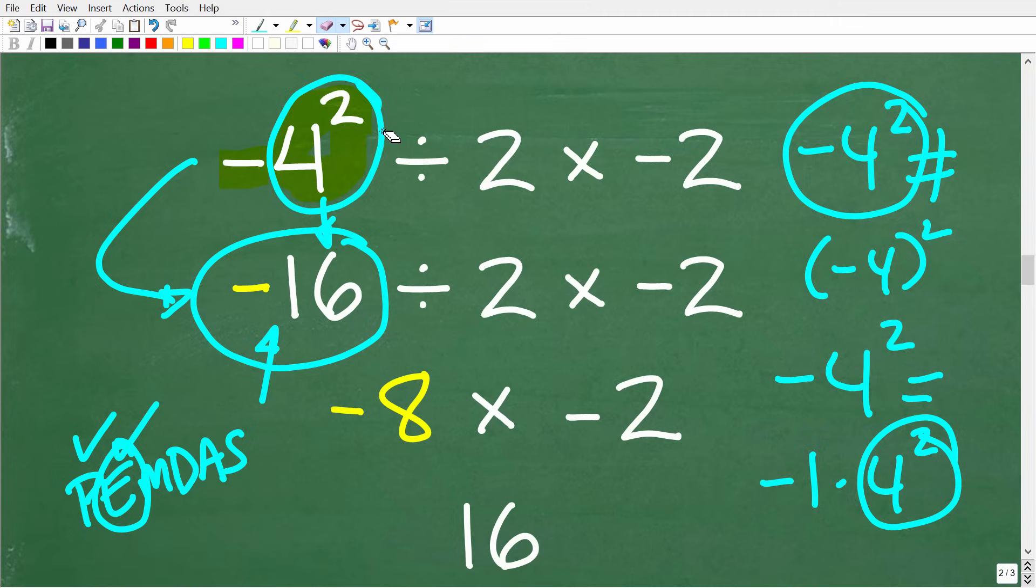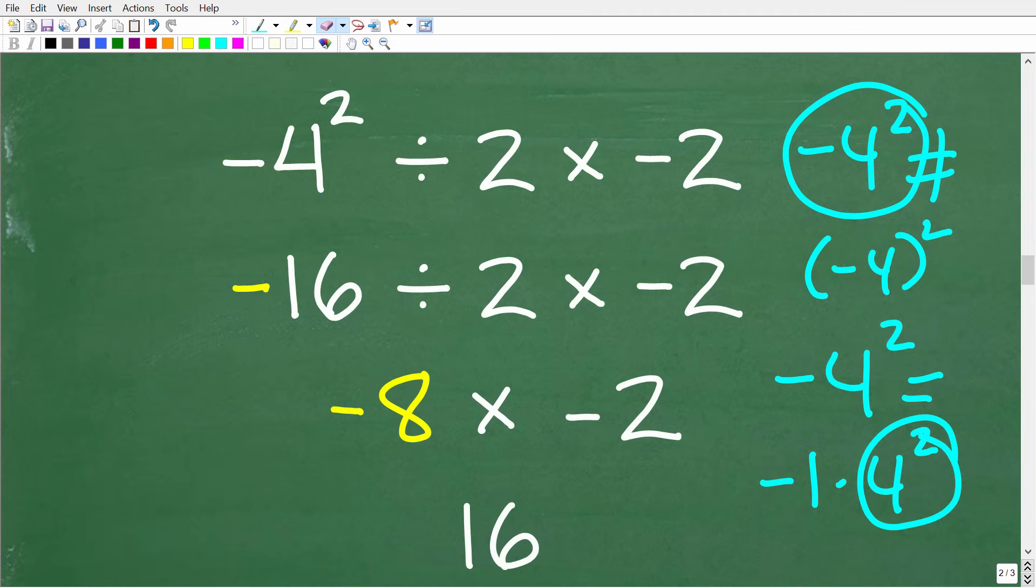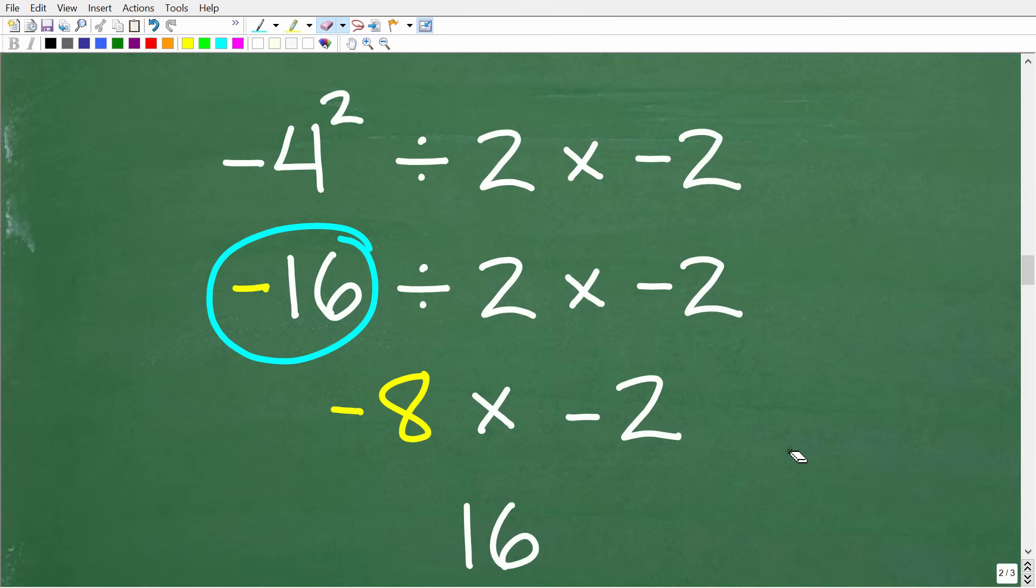Now, I'm spending a lot of time on this because this is a very, very common error that people make. So be careful. Again, negative 4 squared, in fact, is a negative 16. All right. So this was our first mistake. Now, the second error that we determined, or hopefully you determined, was that someone did the multiplication next. And that is not right because we have division and multiplication.